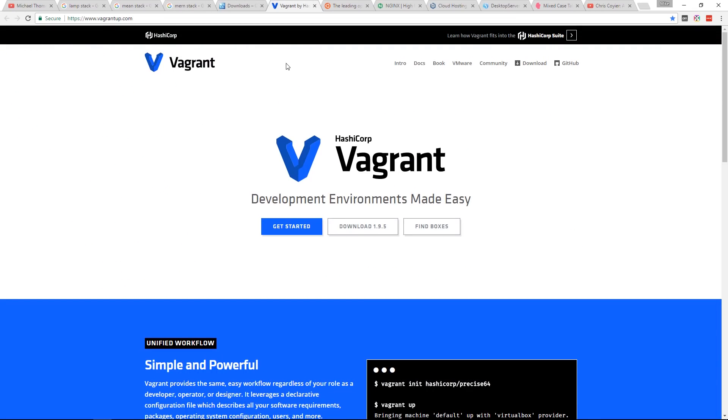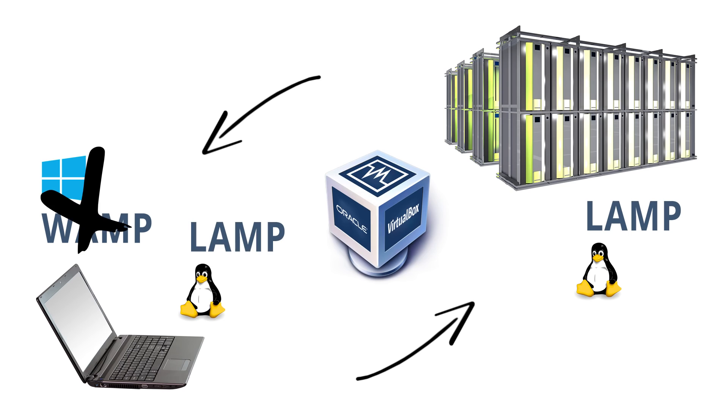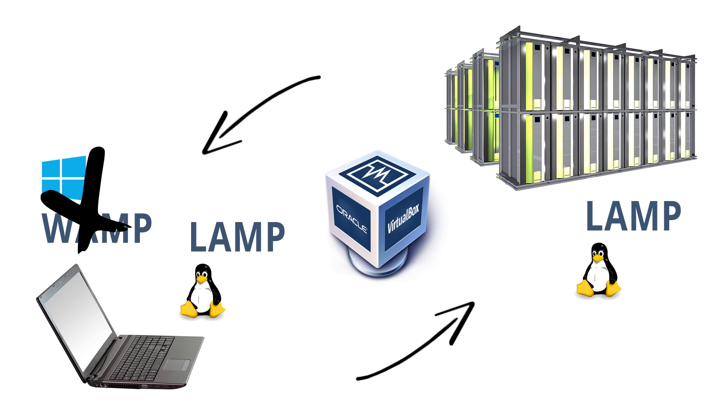As you gain more experience in development, you're going to hear about things like VirtualBox and Vagrant. They allow you to achieve a one-to-one copy between your local development environment and your live server. That can come into play when you're developing large enterprise-level projects, but other than that you really don't need this — by using things like this you're introducing a lot of unnecessary complexity.